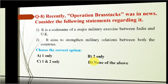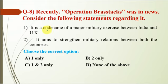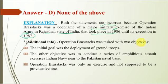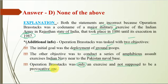Question 8: Operation Brass Tacks was recently in news. Statement 1: it is the code name of a major military exercise between India and UK. Statement 2: it aims to strengthen military relations between both countries. The correct option is D — none of the above; both statements are incorrect. Operation Brass Tacks was a major military exercise of the Indian Army, not with the UK. It took place in 1986 in Rajasthan and was executed in 1987. It had two objectives: deployment of ground troops, and conducting amphibious assault exercises by the Indian Navy near the Pakistan naval base. It was only an exercise and not intended to be provocative.